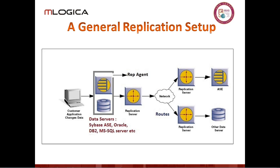Generally, the replication agent identifies changes by looking in the logs. I'm an ASE geek and a SQL Server geek — I don't know what this does on the Oracle or DB2 side, but it must do some equivalent of watching the log to identify what transactions are occurring. Once it identifies transactions that are occurring and relevant — we may only be replicating from certain tables — it passes this information to the replication server, which can route it across the network to other replication servers, ASE servers, IQ servers, or whatever your target environments are.